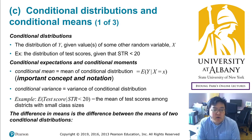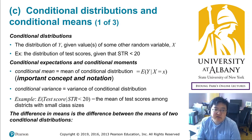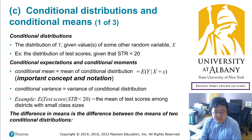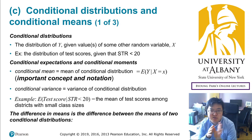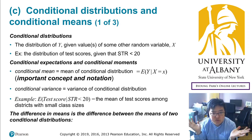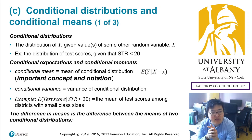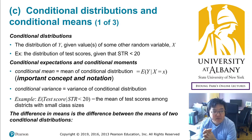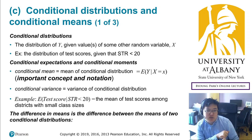Our next topic is conditional distributions and conditional means, or more generally, conditional expectations. Let's first think about conditional distributions. So far we have considered the distribution of a single random variable, which is intuitive. We could also define the joint distribution of two random variables. From the joint distribution, we can think about the relationship, and one step further, we may consider conditional distributions.